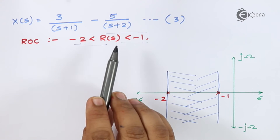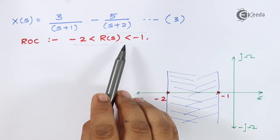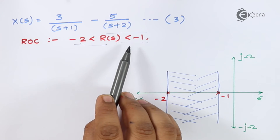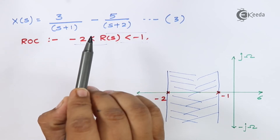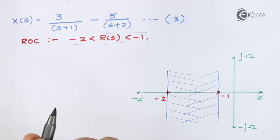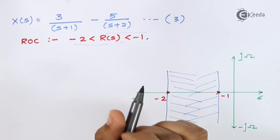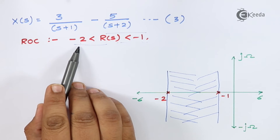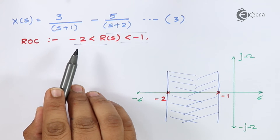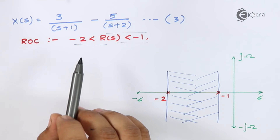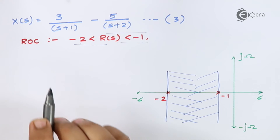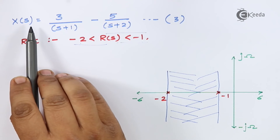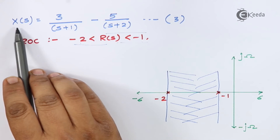If the pole produces a left-sided ROC, then the inverse Laplace of 1/(s+a) is replaced by -u(-t) form. If the pole produces a right-sided ROC, then the inverse Laplace of 1/(s+a) is u(t) form. Now applying inverse Laplace transform on equation number three.